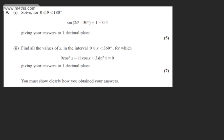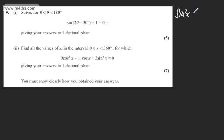Let's now look at the second part of the question. Part 2 says: find all values of x in the interval where x is between 0 and 360 degrees, for which 9 cos squared x minus 11 cos x plus 3 sine squared x equals 0, giving answers to one decimal place. The question carries seven marks and you must show clearly how you obtained your answers. What I need to do is get this into one trig ratio — I am going to use cosine because we have cos to the first power, and I can change sine squared using an identity.